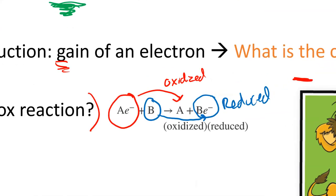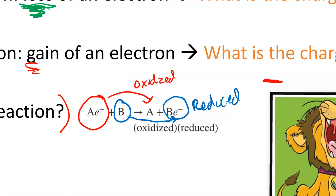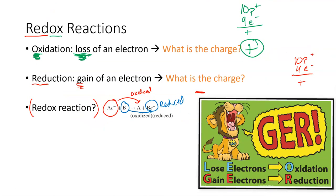A is being oxidized because on the left side it has the electron and loses it on the right side. B on the left side has no electron, but once it goes through the reaction it gains one — we call that being reduced. A great mnemonic: LEO the lion goes GER. LEO = Lose Electrons Oxidation; GER (the roaring of the lion) = Gain Electrons Reduction. This is a great way to remember what happens in redox reactions.